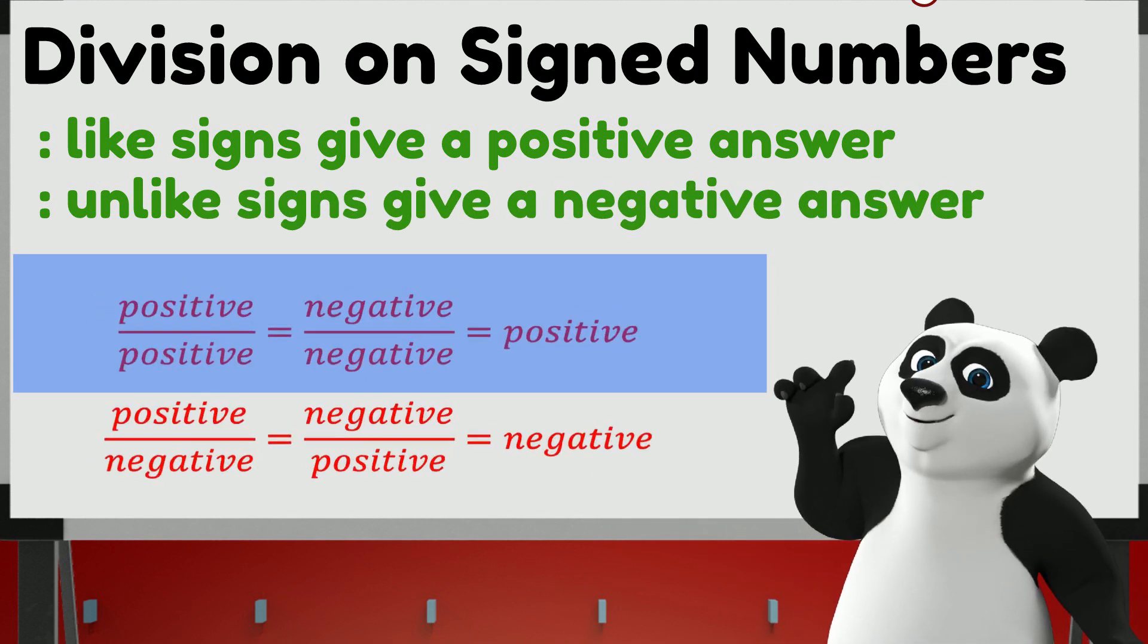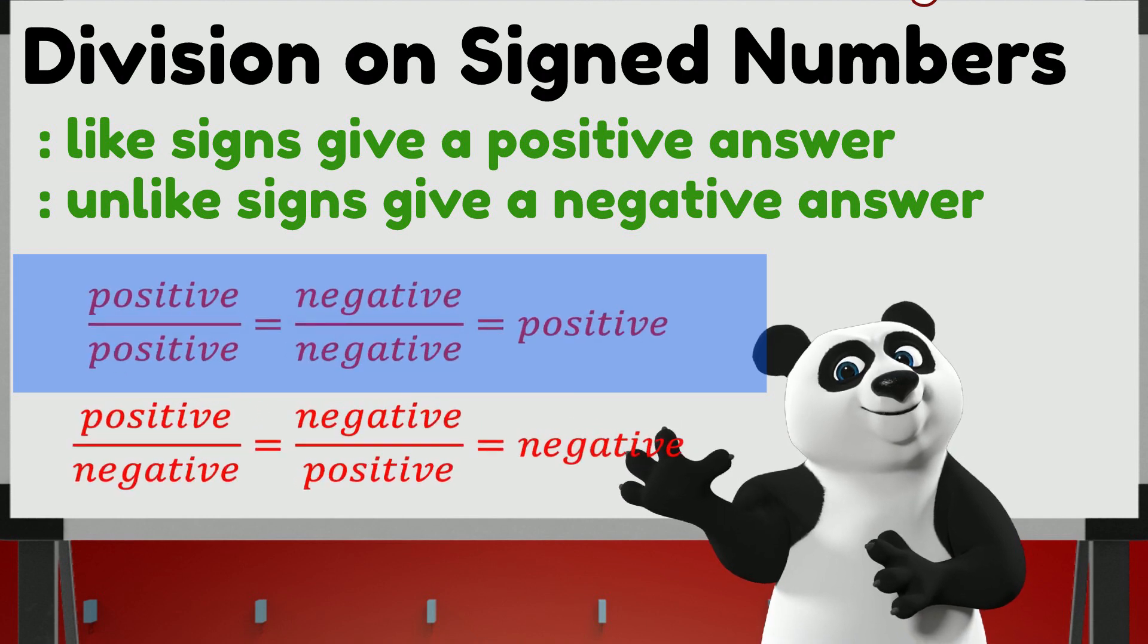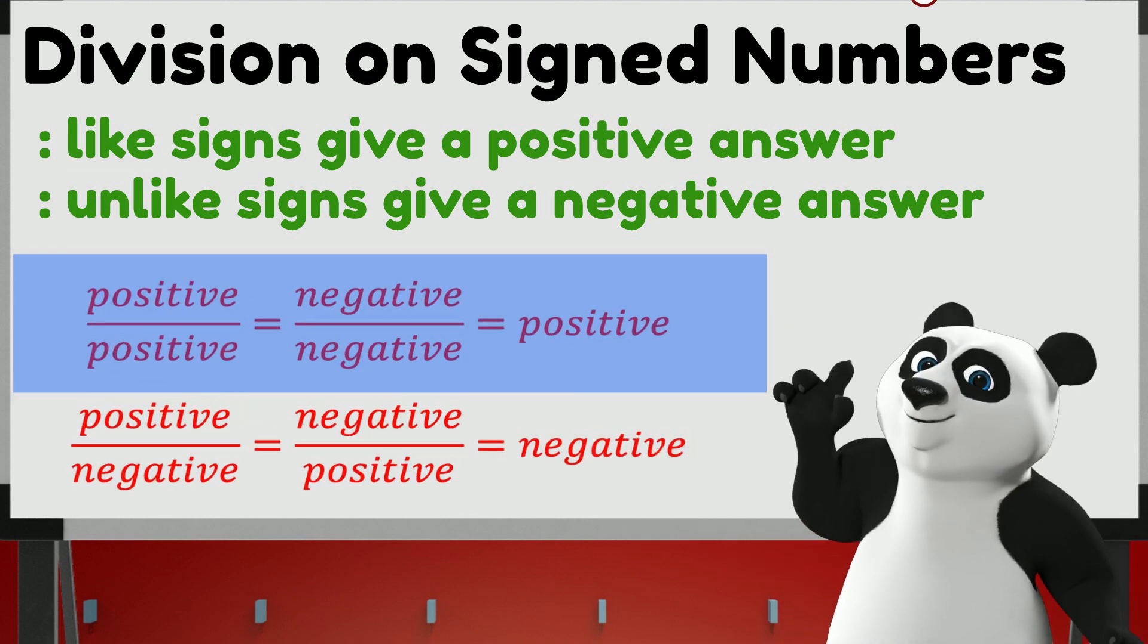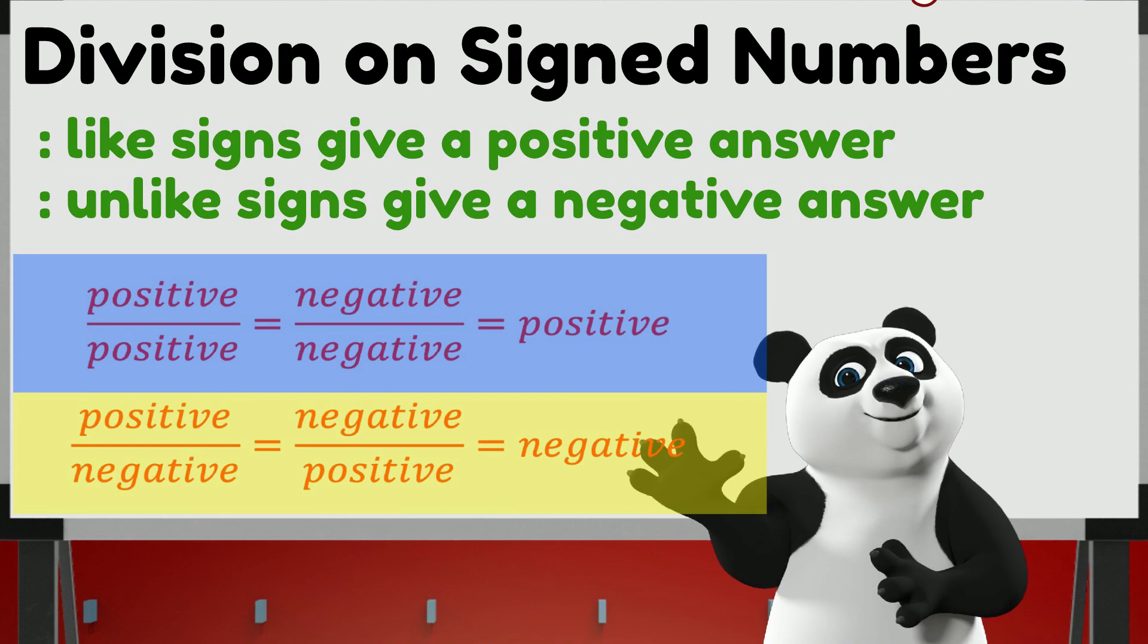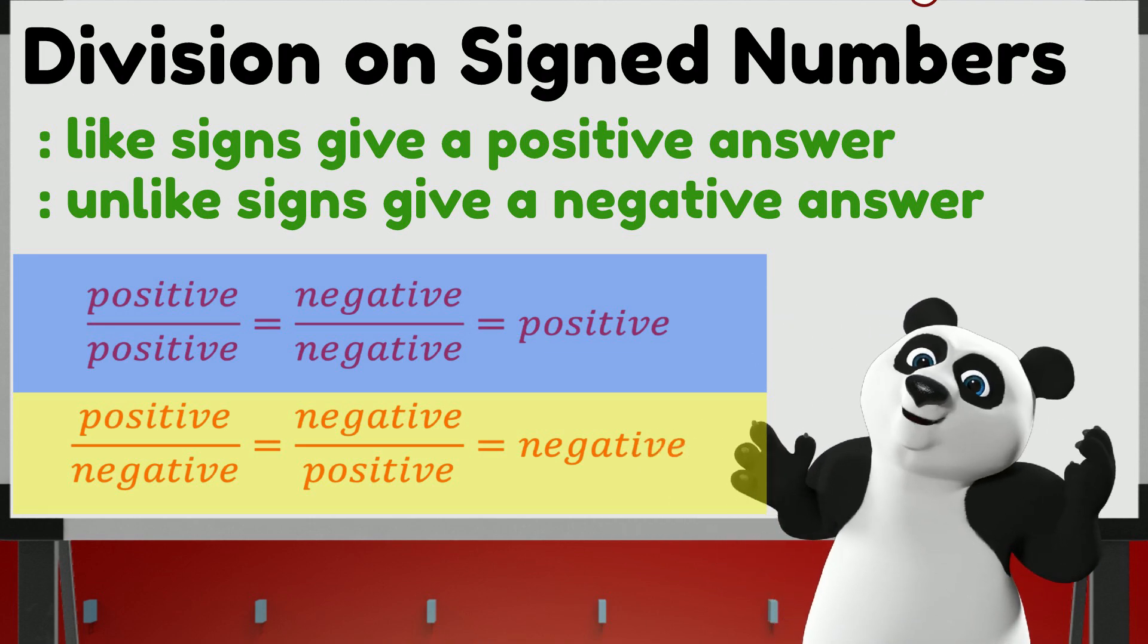Positive divided by positive and negative divided by negative give a positive quotient. Positive divided by negative and negative divided by positive give a negative quotient.